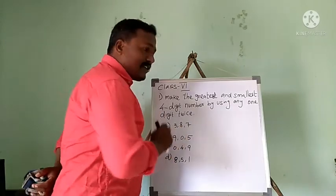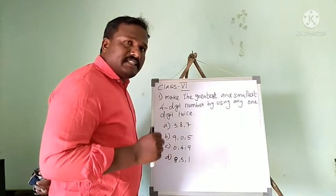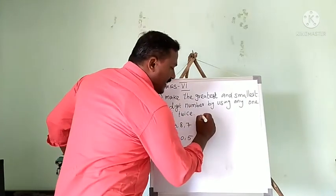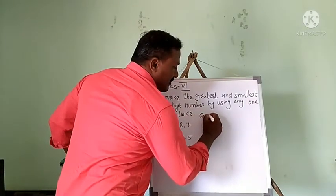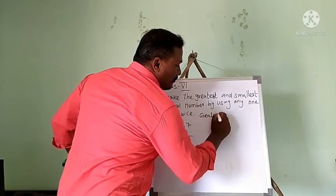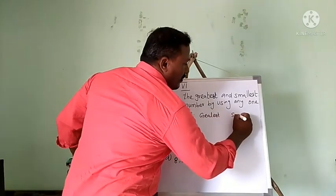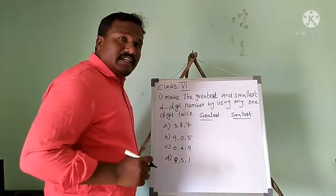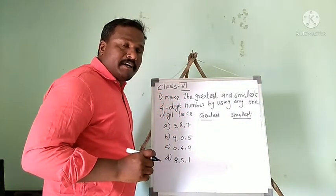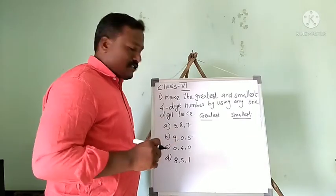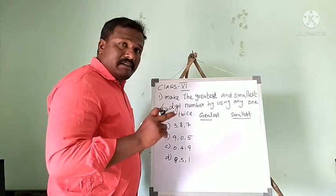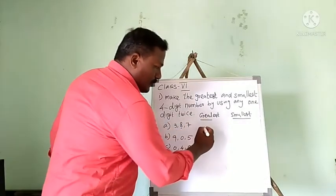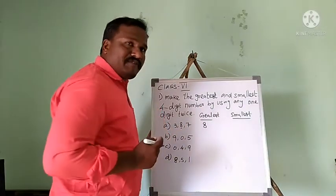For the digits 3, 8, 7, I am first going to make the greatest number. As I told you, when you create the greatest number you have to write in descending order — bigger number first. So the biggest number here is 8, so I put 8 first.